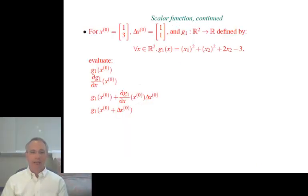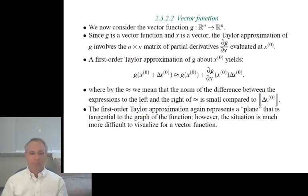So, as an example, we could start out with the function I've shown there, have an x0 and a change. We could evaluate g1 and x0, evaluate the partial derivative, evaluate the Taylor approximation. And then you should compare it to the actual value of the function. Whenever you see some printing in red, that's an exercise that I would ask a student in class to solve.